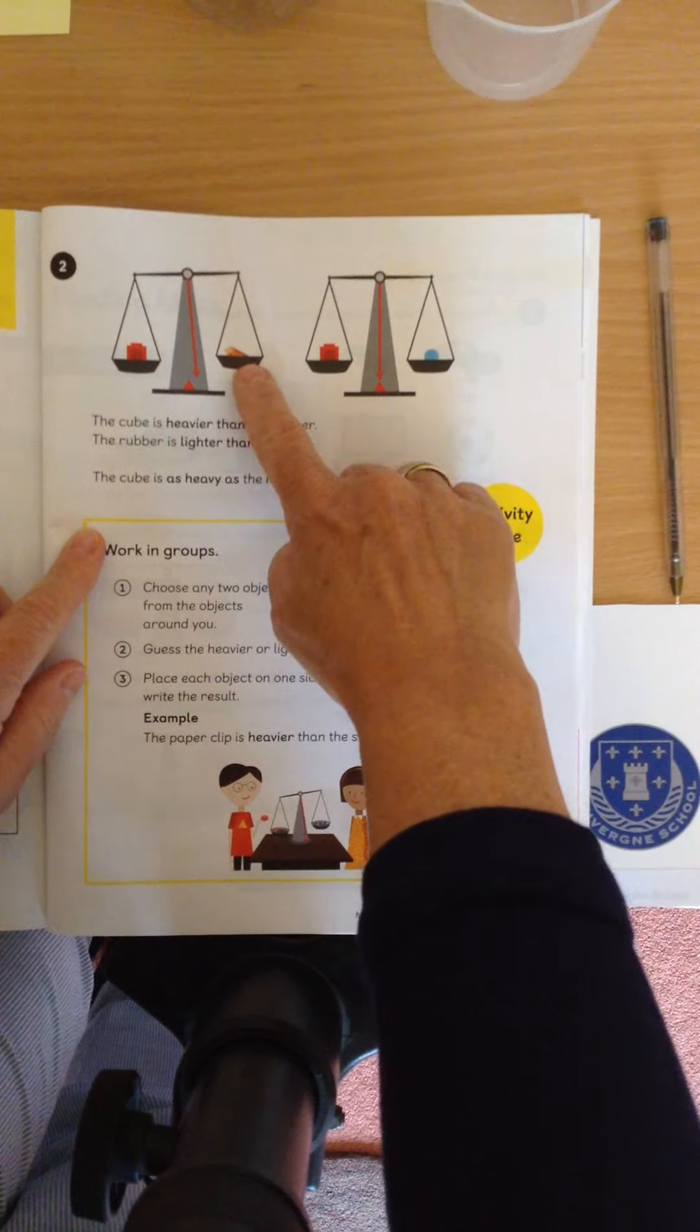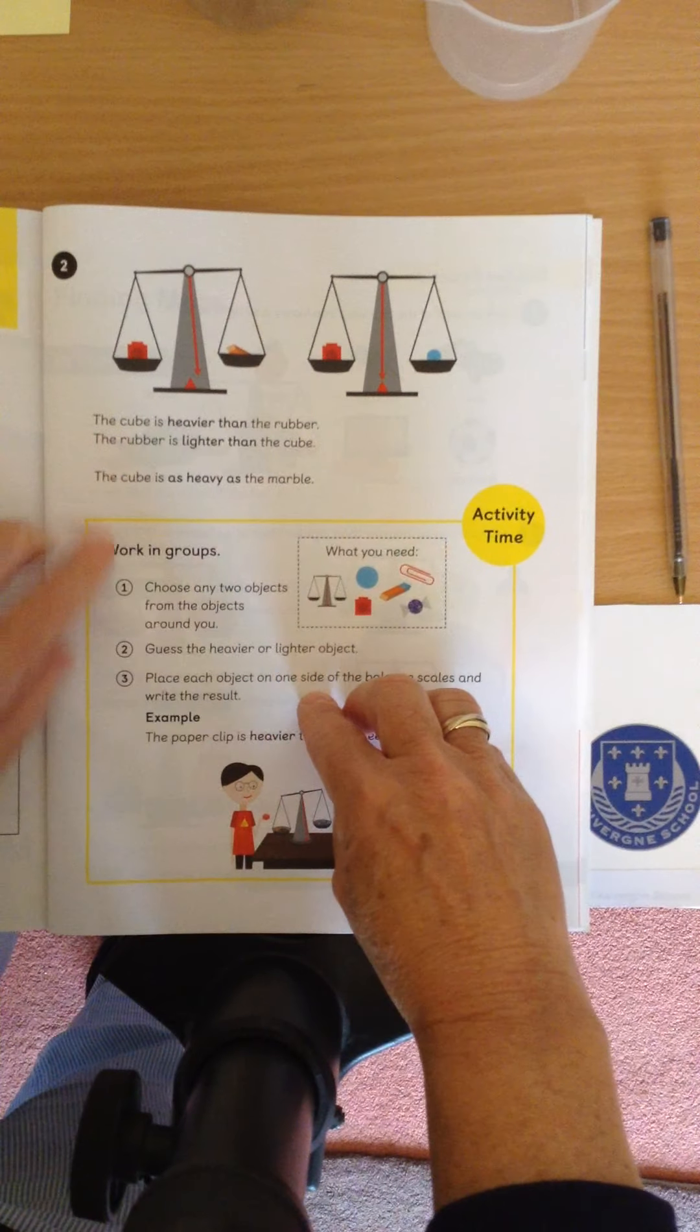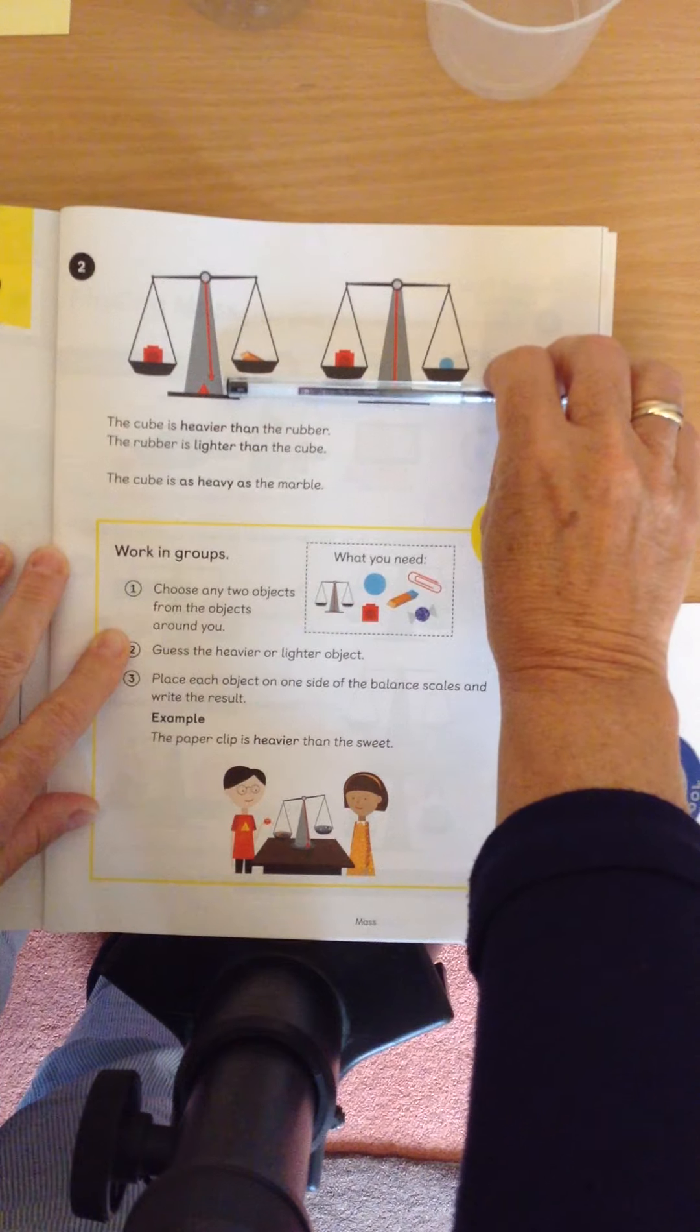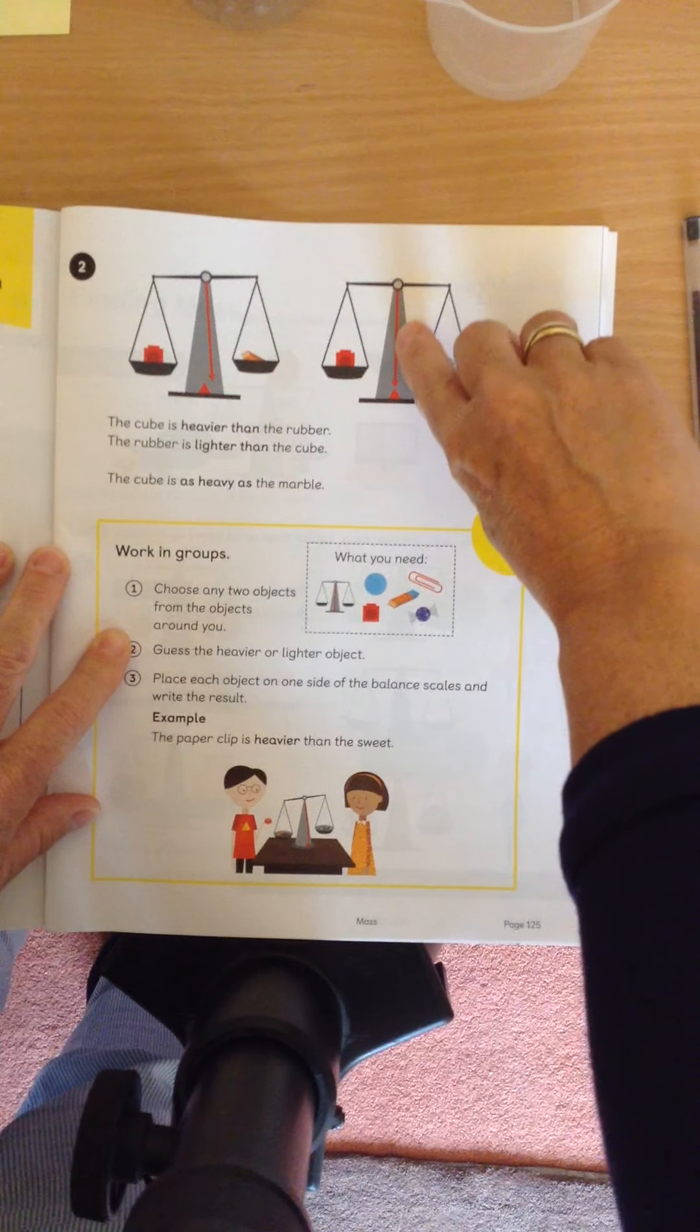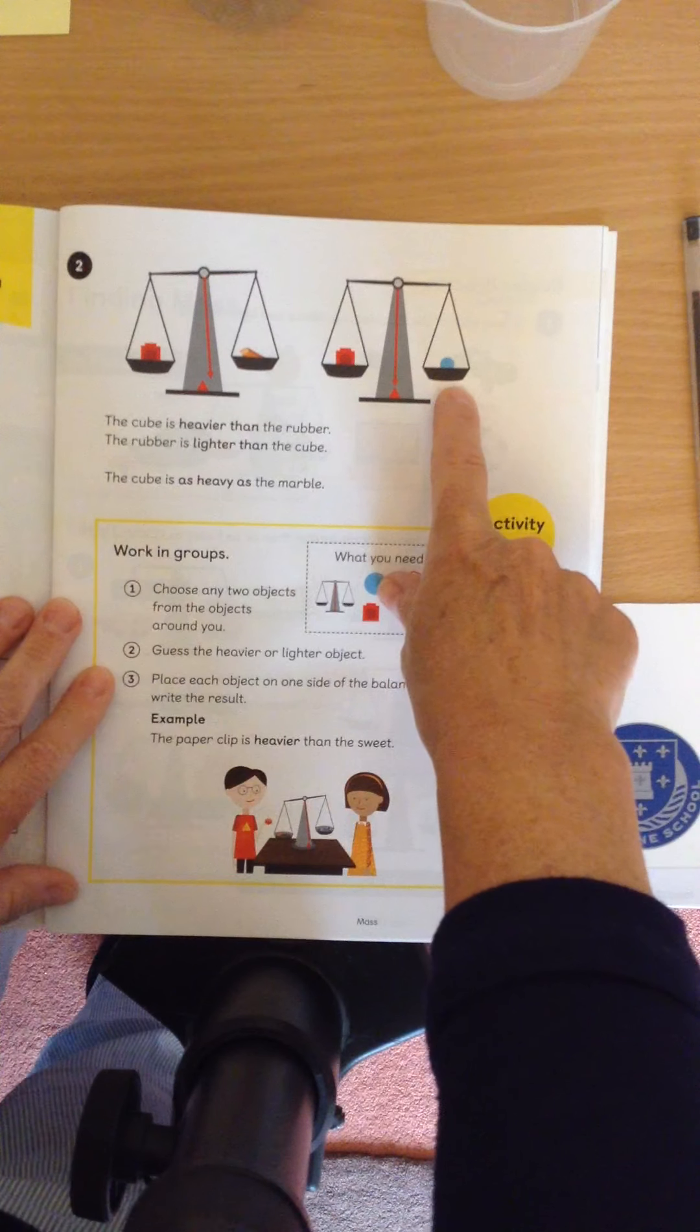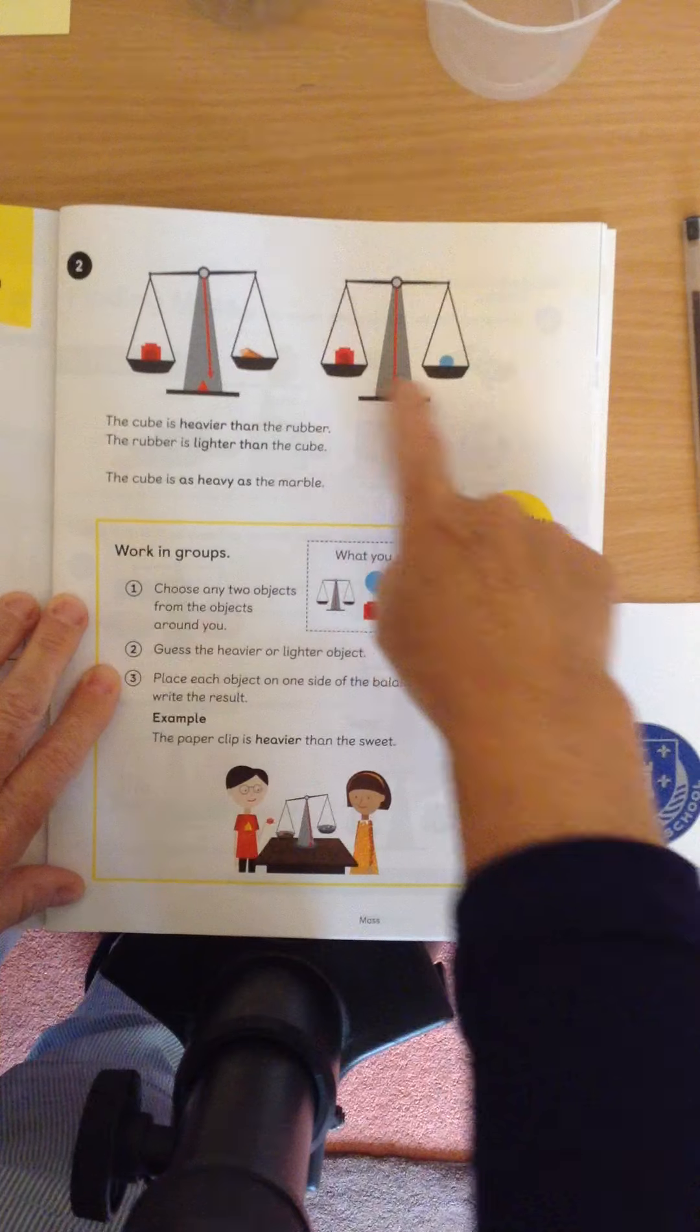If we look in this picture here, at our two pans, put a little line underneath them both, can you see they're the same? And this line down the middle is pointing at the arrow, they are the same. So, the cube is as heavy as the marble, or the marble is as heavy as the cube, they're the same.